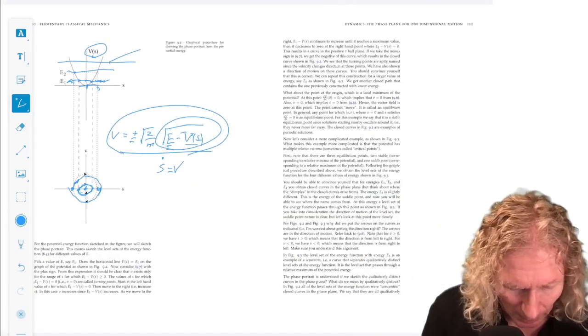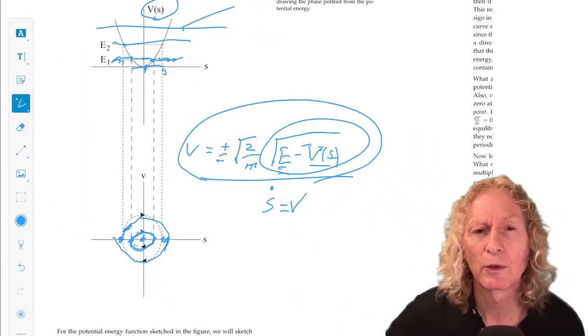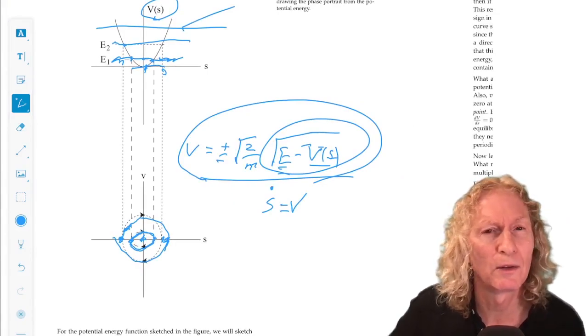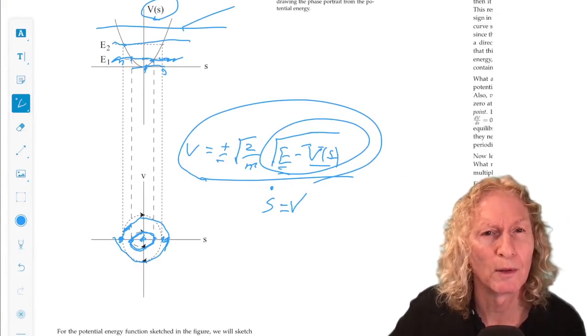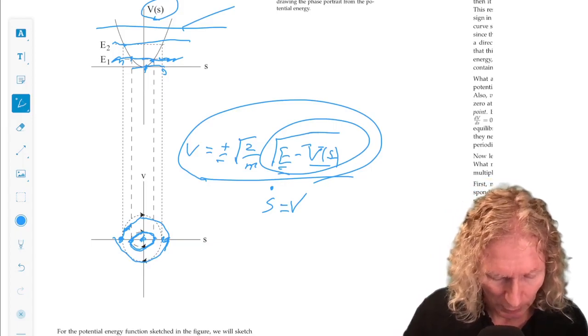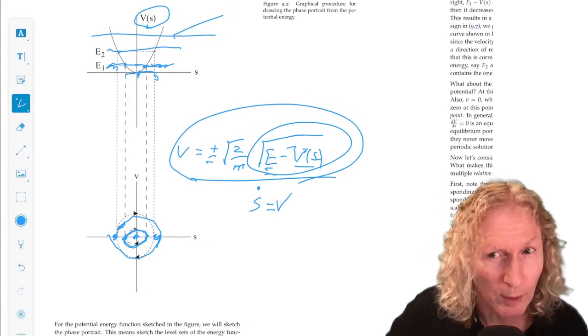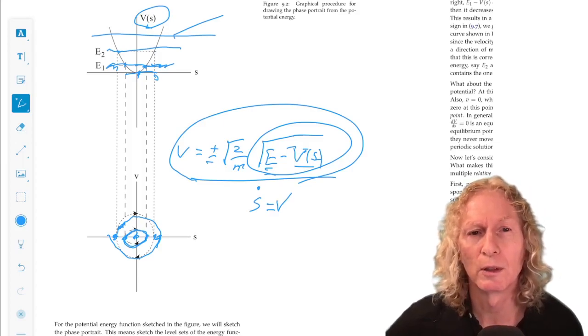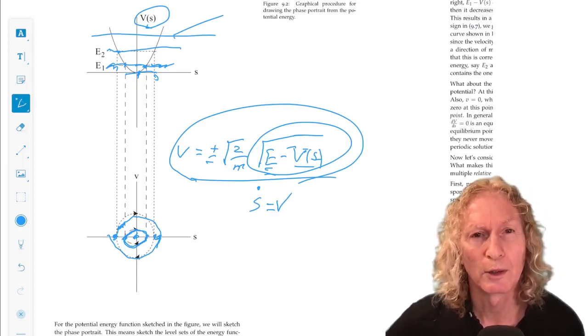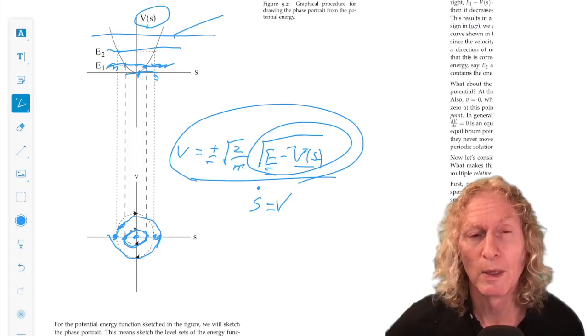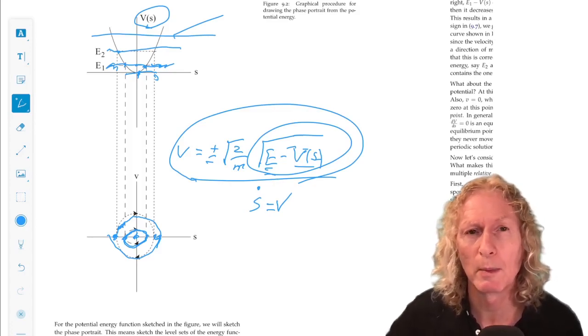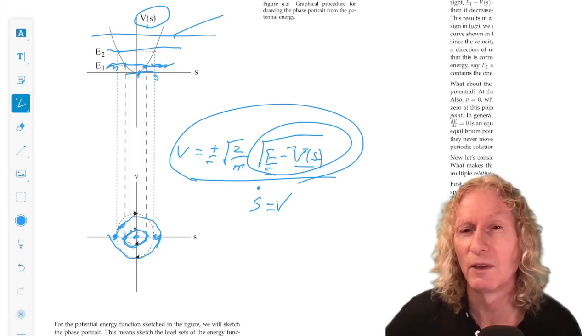So we've completely constructed the phase plane based on these properties of the potential energy function. This particular equilibrium point at the origin, corresponding to the critical point, which happens to be a minimum of the potential energy function, is stable.